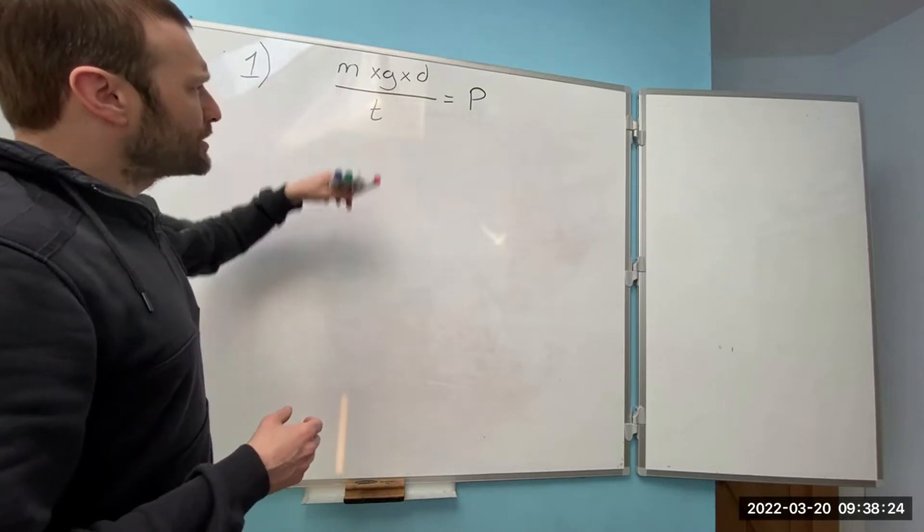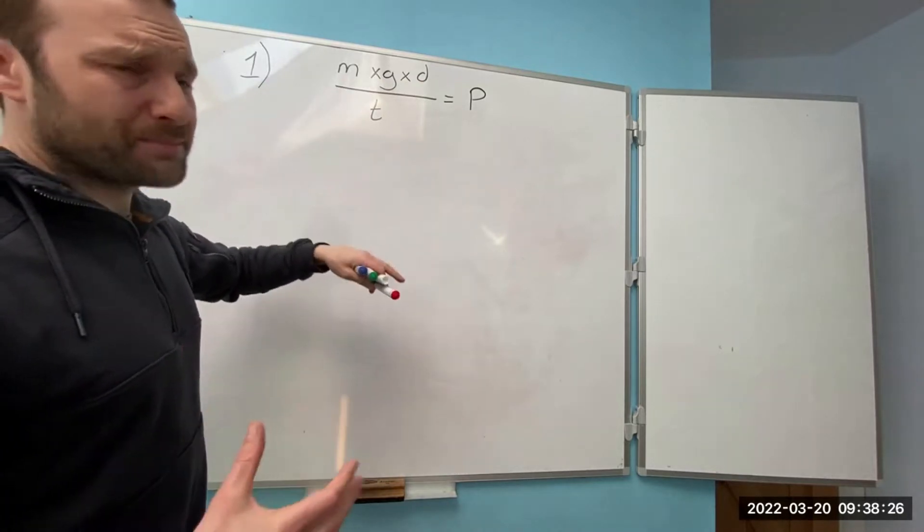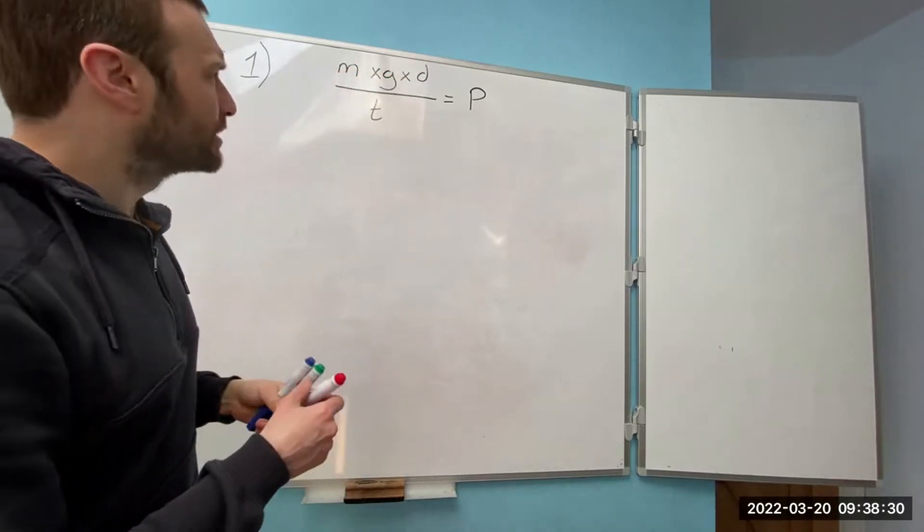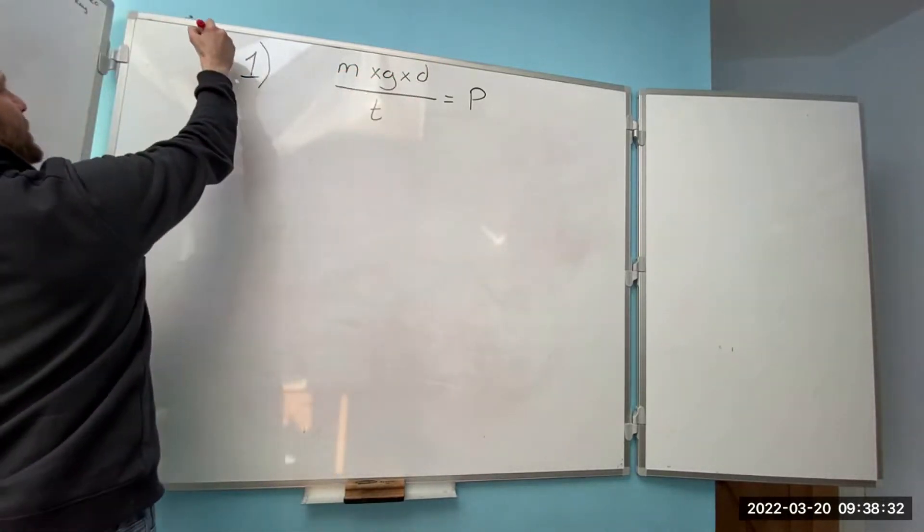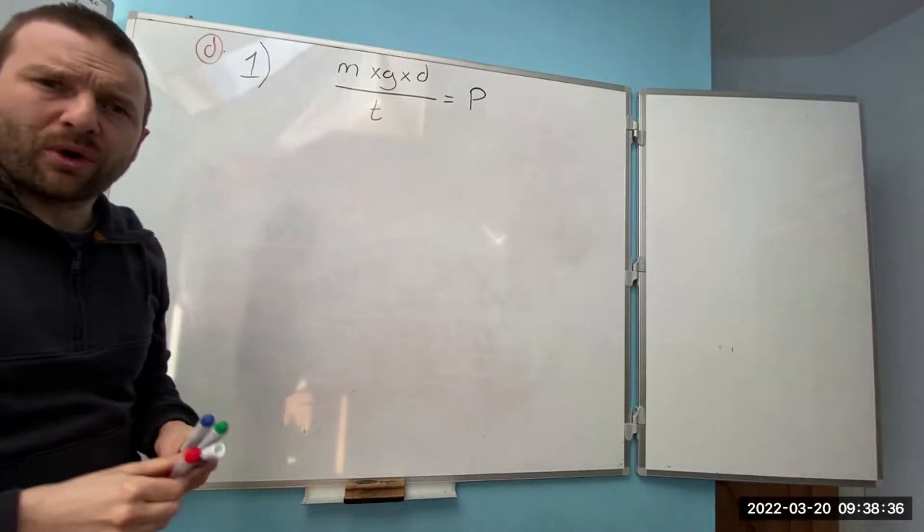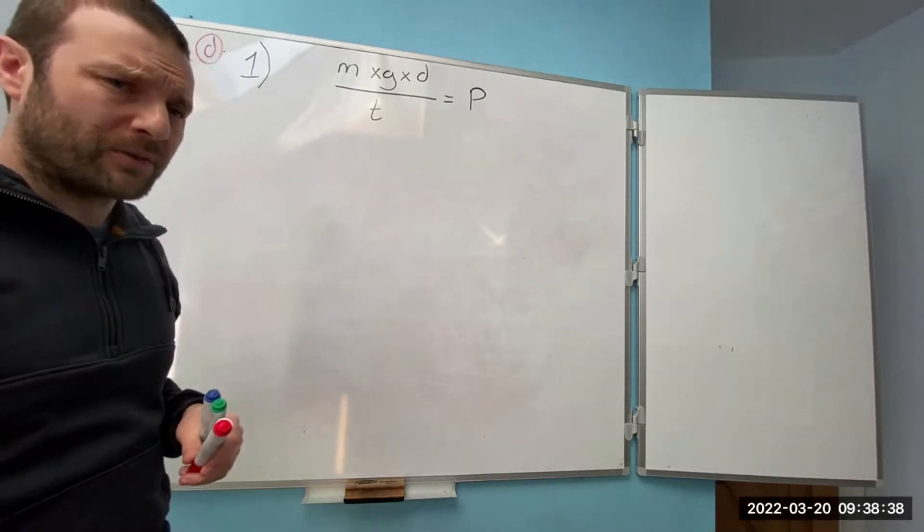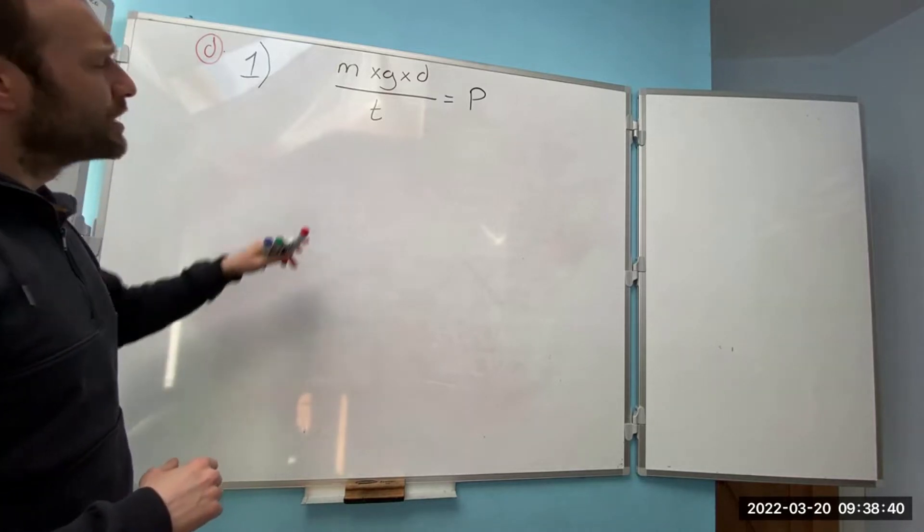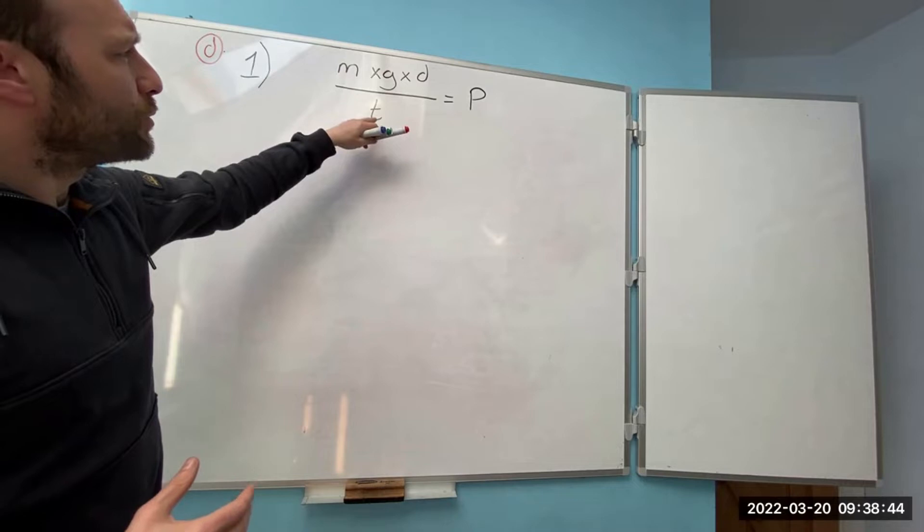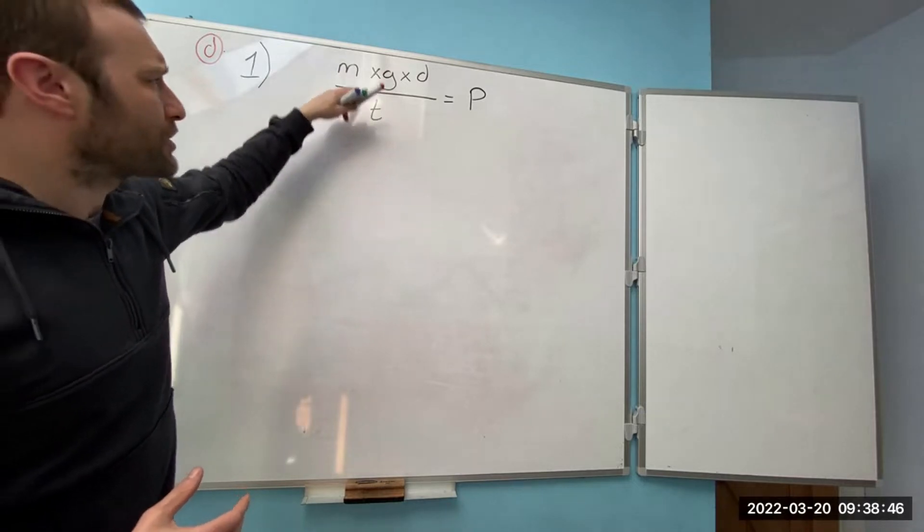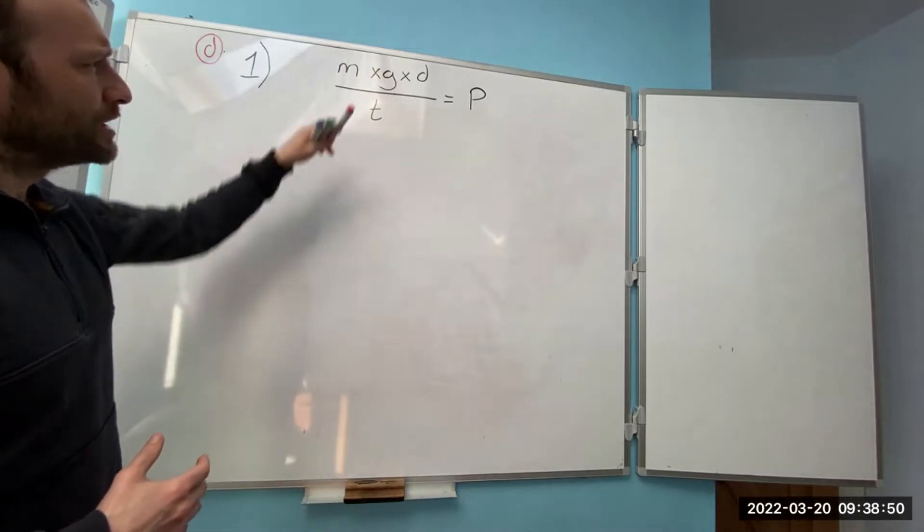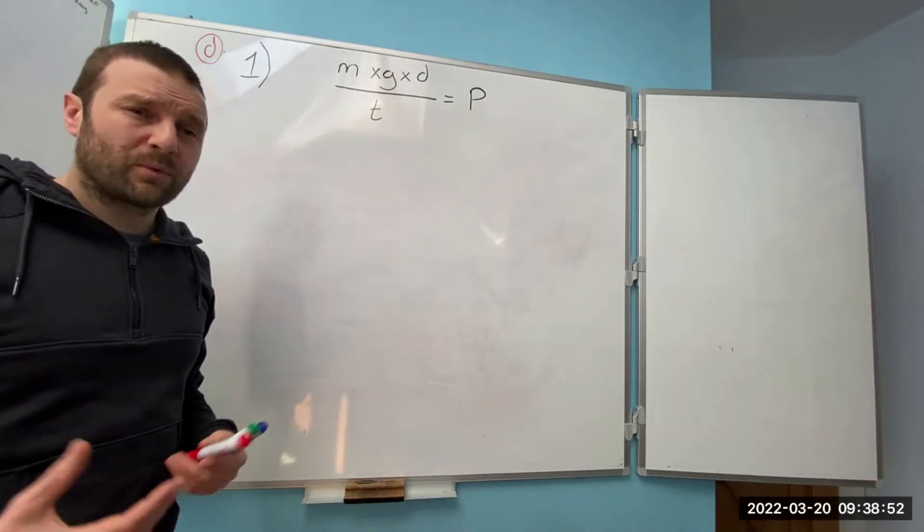As you see I've got step one and we're going to choose to transpose something from the top. So we need to find distance. I'm going to put distance in a circle up there so I don't forget what we're looking for. Firstly we need to deal with this fraction and get everything below the line above the line. What's the opposite of divide? That's times. So we're going to times the t out.